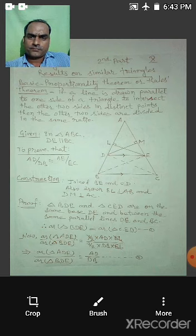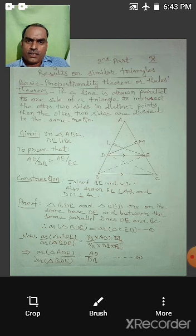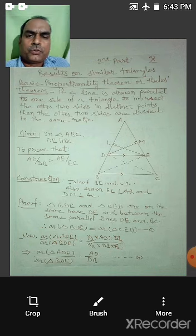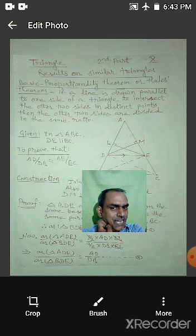He was a great mathematician. So what does Thales' Theorem state? If we draw a line parallel to one side of a triangle, then it will divide the other two sides in the same ratio. As you can see in the diagram here, there is a triangle ABC.